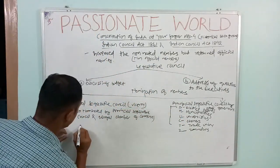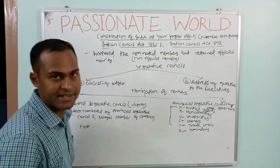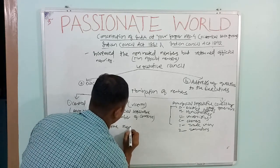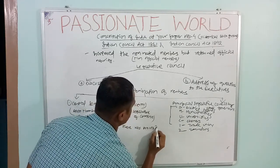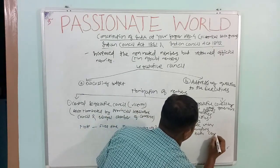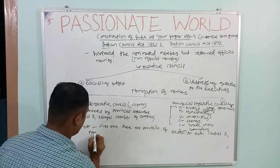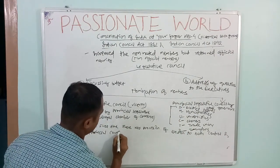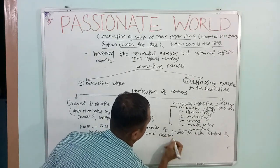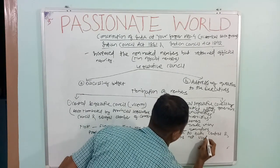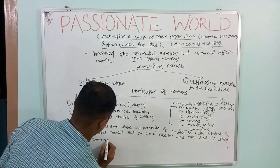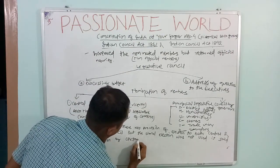There is an important point about the Indian Council Act 1892: for the first time, there was a provision of election to both central and provincial legislative councils. However, the word 'election' was not used — it was instead referred to as 'nomination by certain bodies.'